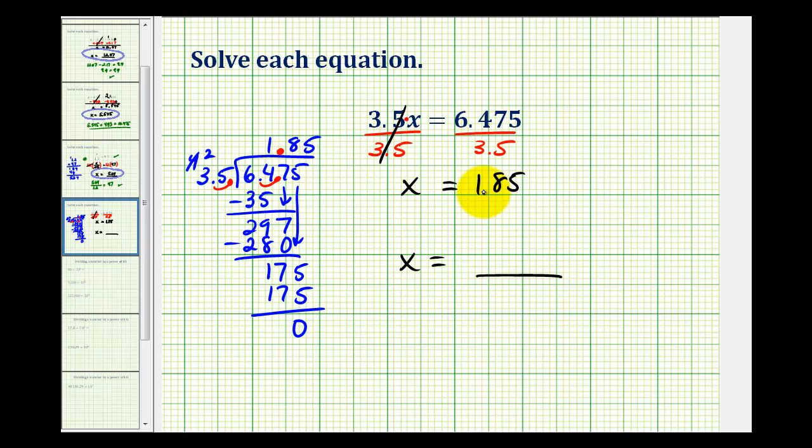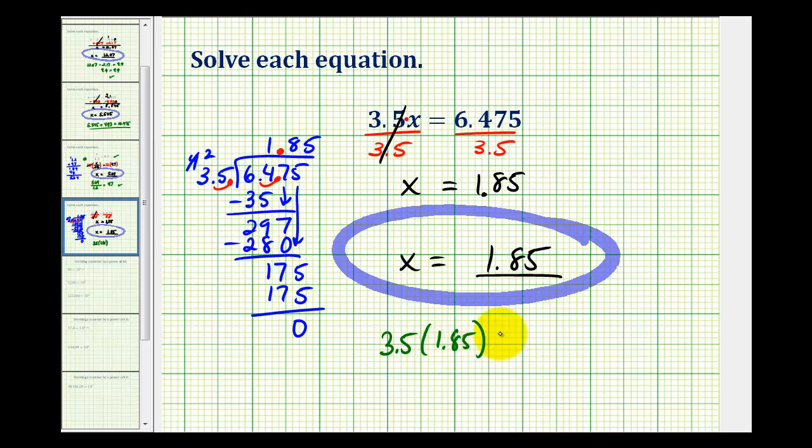Remainder is 0. So this quotient is 1.85, or 1 and 85 hundredths, which would be the solution to our equation. Which again means that if x is equal to 1.85, it should satisfy the original equation. So 3.5 times 1.85 must be equal to 6.475. And again, I would encourage you to verify this, but it is true.